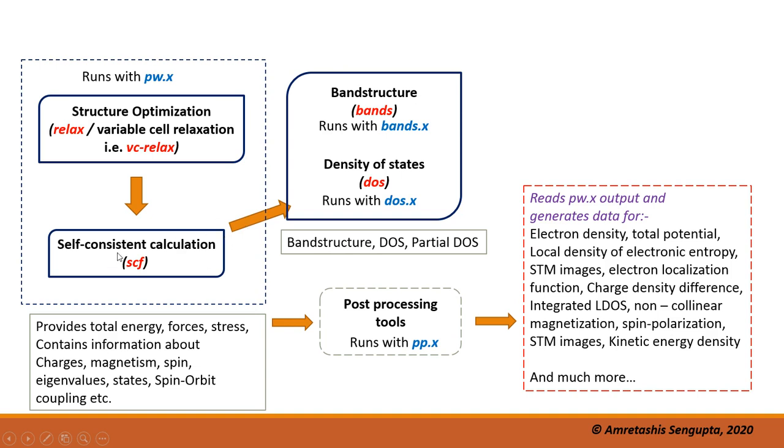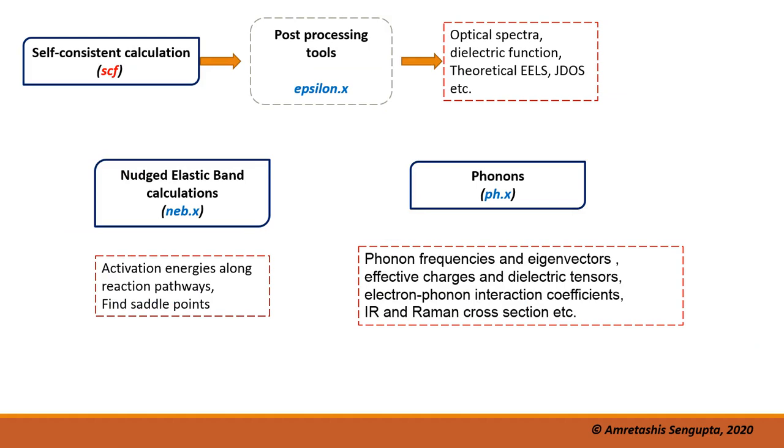On top of this SCF calculation, you can run other calculations once this has converged. Bands.x for band structure and DOS.x for density of states. Further, if you want optical properties, you can apply the post-processing tool epsilon.x to get optical spectra, dielectric function, theoretical EELS, J-DOS, and such things.